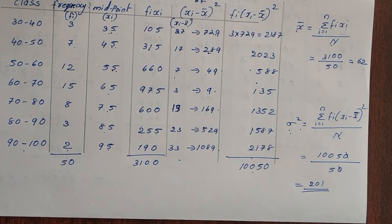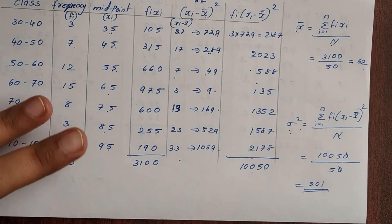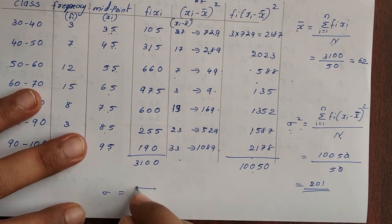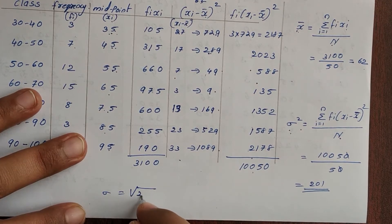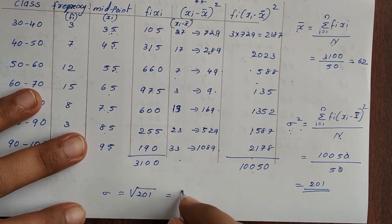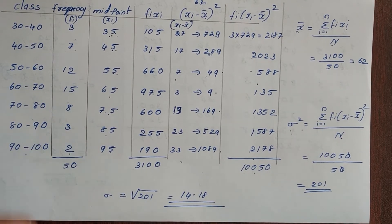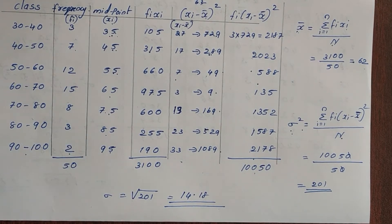The result is the variance, which is 201. I am using standard deviation. Sigma equals the square root of 201, which equals 14.188. So 14.188 is the standard deviation.